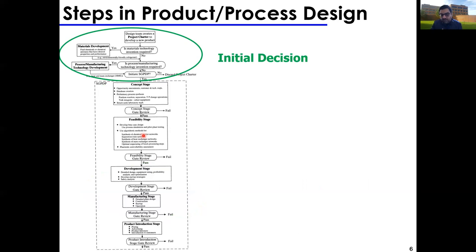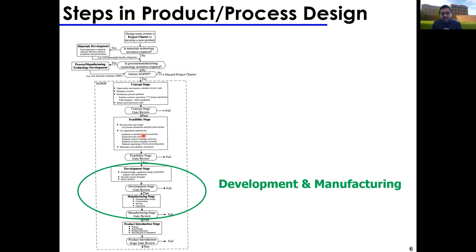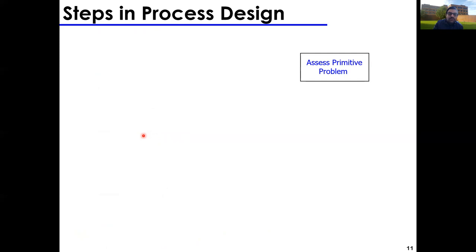After development comes product introduction — marketing, pricing, and selling to make money from the product. As a chemical engineer you could work at any of these stages: R&D at the initial decision stage, concept and feasibility as a project or research engineer, development and manufacturing as a process engineer or technology specialist, and product introduction in technical sales or advertising, where a technical understanding of the process is valuable even though the main objective is selling to customers.